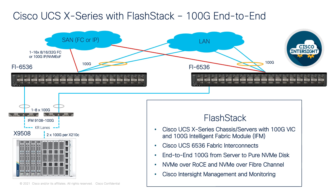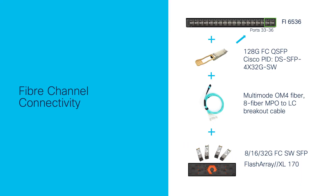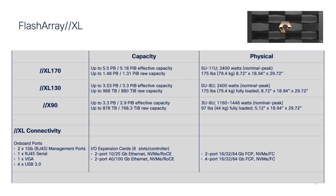Each Compute Node will get 200 Gigabit of aggregate bandwidth using 5th Gen 15231 VIC to enable end-to-end 100 Gigabit Ethernet and 32 Gig fiber channel. The last four ports of FI support both 100 Gigabit Ethernet and fiber channel at 128 Gig. Fiber channel connectivity will be provided using 128 Gig FC QSFP and multi-mode MPO to LC breakout cable.